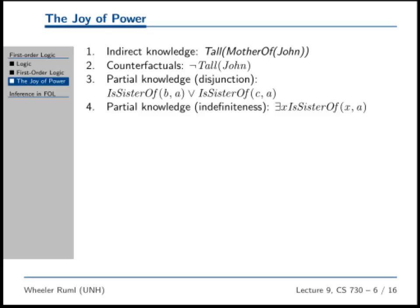Partial knowledge, like disjunction. Like A is either the sister of B or C, but I'm not sure which one. That's very handy. Like Osama bin Laden is hiding here or here or here. You might be able to say things like that and then rule some of them out by inference. What's our favorite inference rule, by the way? Modus ponens. No, not modus ponens. How are we going to resolve this question?